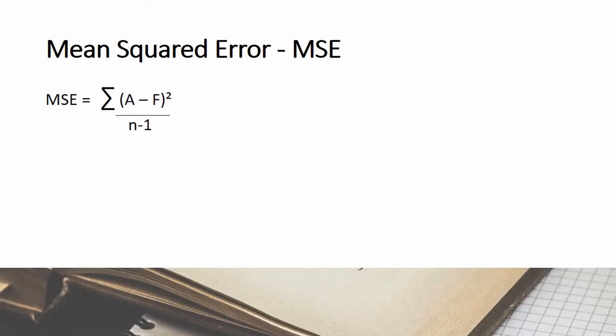This is the equation used for mean squared error. We square the errors and get the summation. The summation is divided by the number of data minus 1.